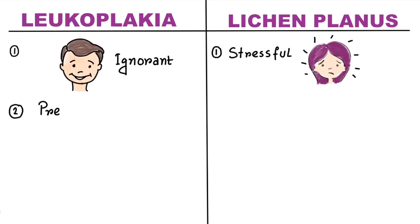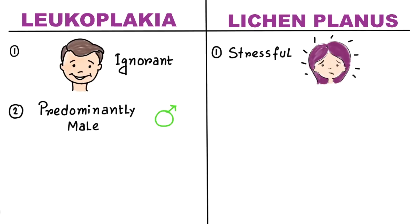Leukoplakia predominantly occurs in males, which is because of tobacco and smoking habits, which are more common in males in comparison to females. However, Lichen Planus mostly occurs in female patients.